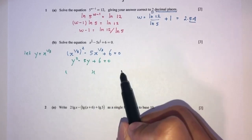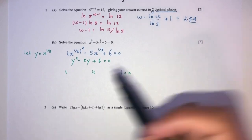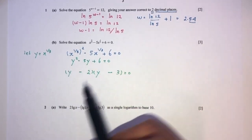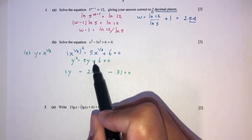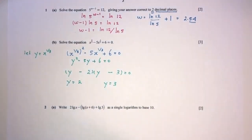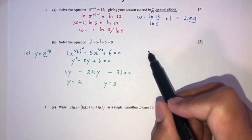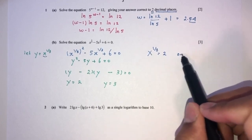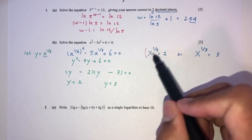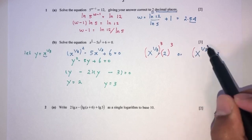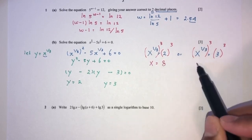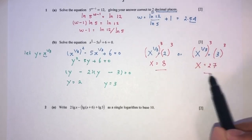We can factorize: (y minus 2)(y minus 3) equals 0, giving y equals 2 or y equals 3. But we're trying to find x, not y. So x to the power 1/3 equals 2 or x to the power 1/3 equals 3. Applying the power of 3 to both sides, x equals 8 or x equals 27.